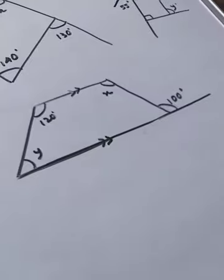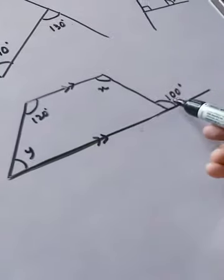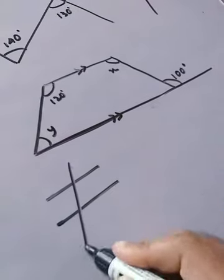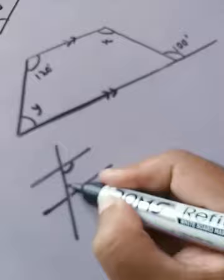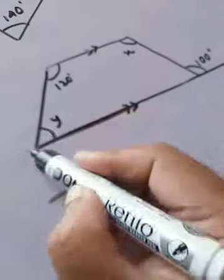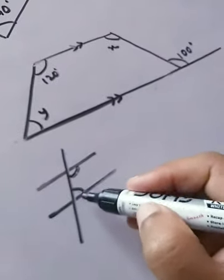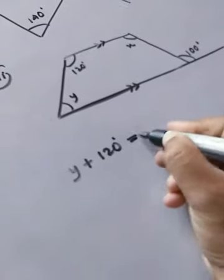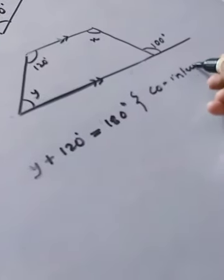Question number three involves a trapezium where opposite sides are parallel to each other, and 100° is an interior angle. As we learned in the parallel lines section, if two lines are parallel and a third line is a transversal, the two angles formed are co-interior angles. Their sum is always 180°. So let's find y first: y + 120° = 180° (co-interior angles).